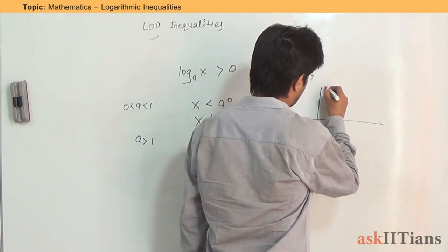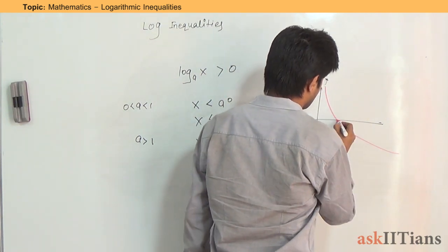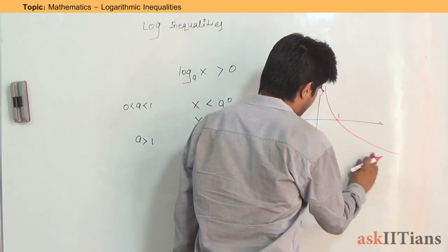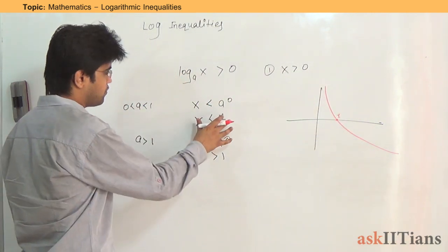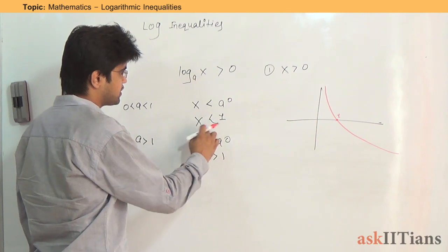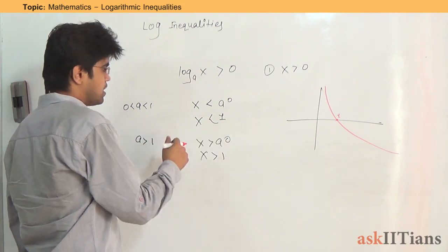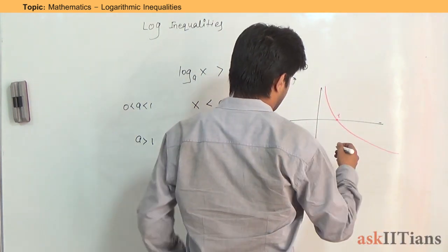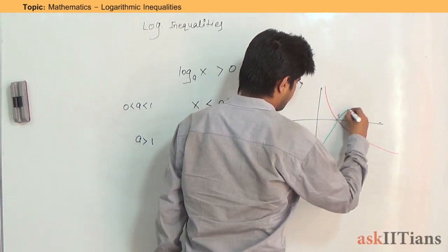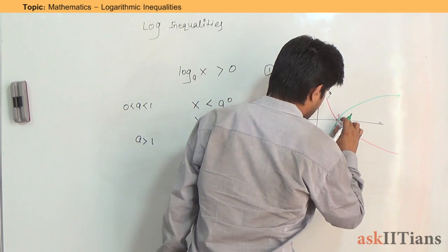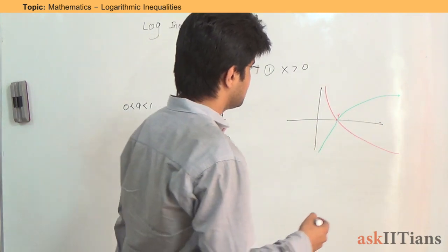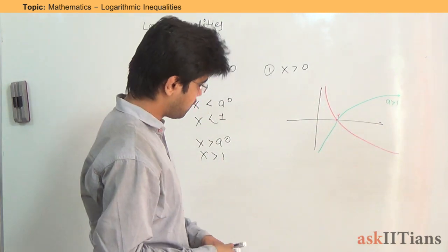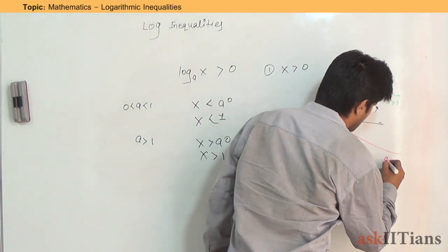For base less than one, the graph behaves like this: after the value one, the graph is negative. So if you want a positive value, the values of x have to be before one. On the other hand, if base is greater than one, the graph goes the other way — to get a positive value, you have to go ahead of one. The left graph is for base greater than one, the right one is for base between zero and one.